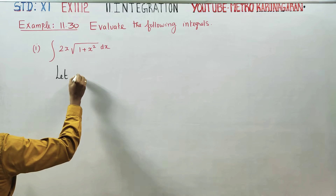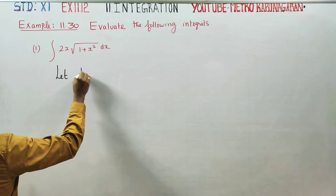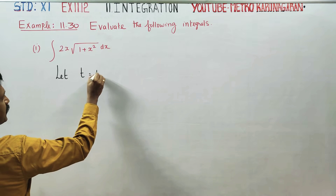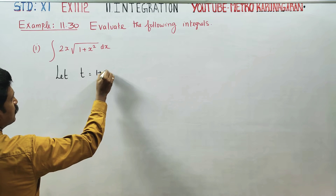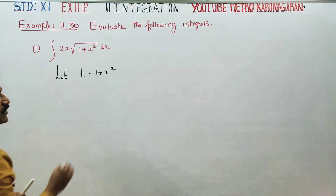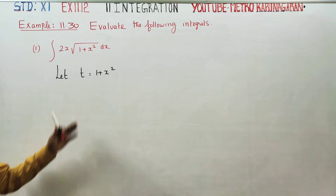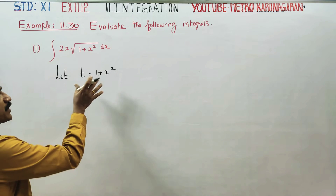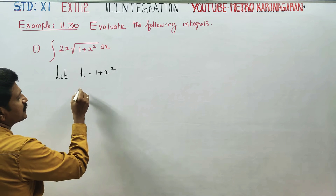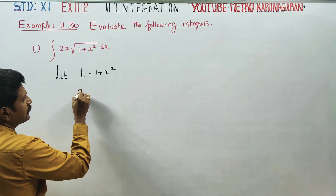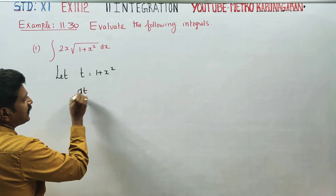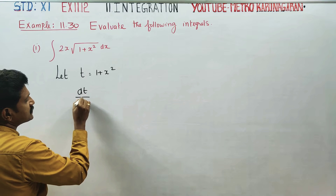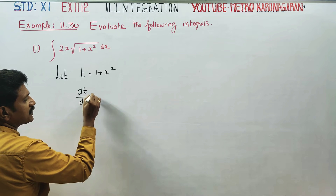In 1 plus x square, I put t. Let t is equal to 1 plus x square. Differentiating, dt by dx — differentiate x to get dt.